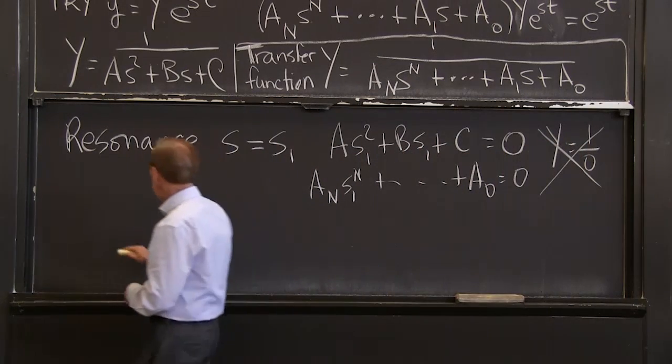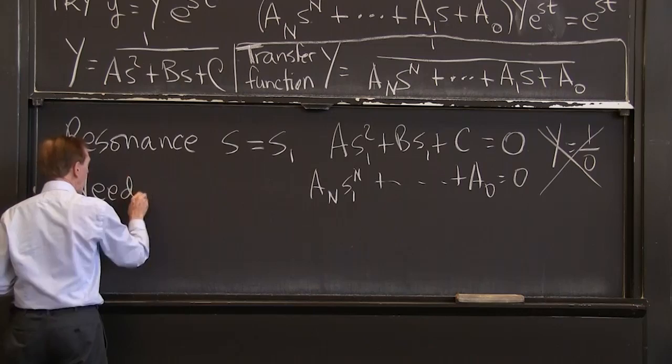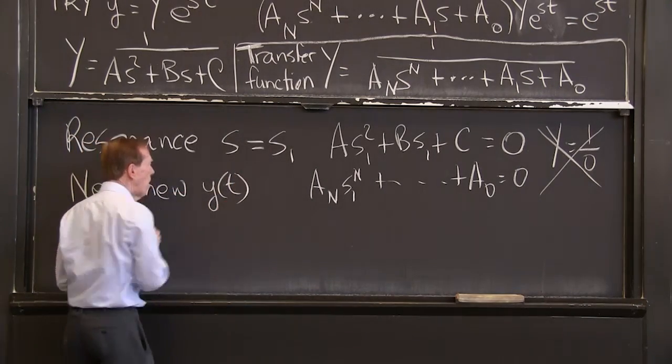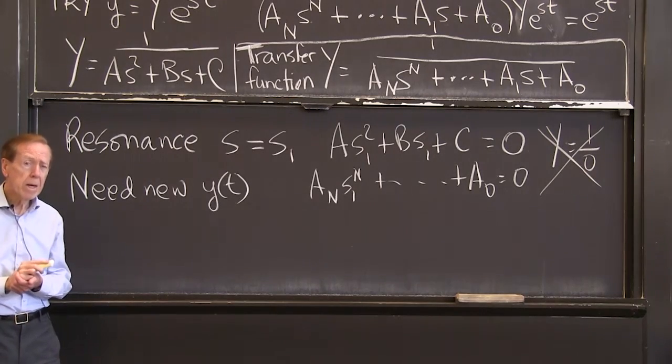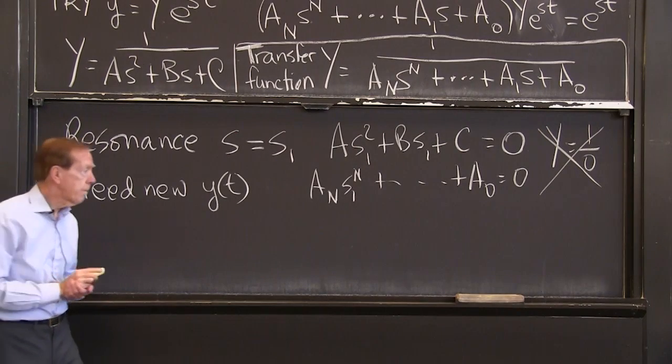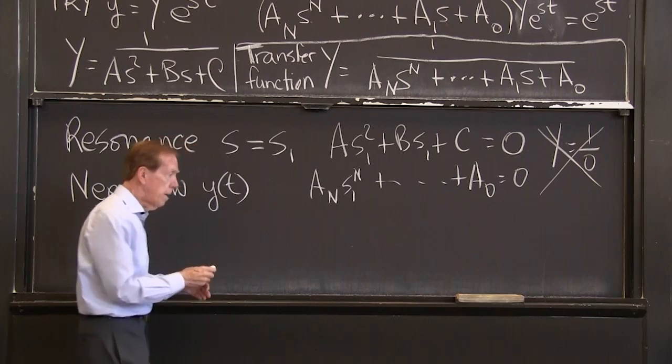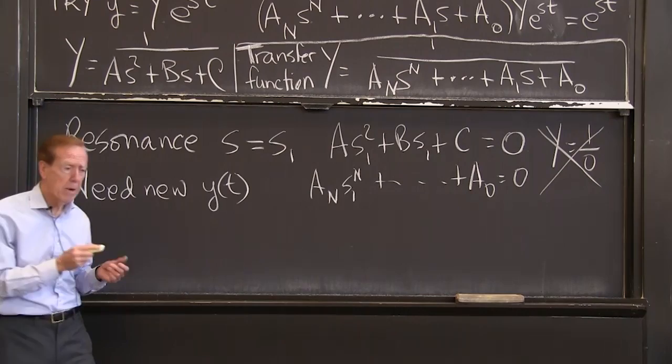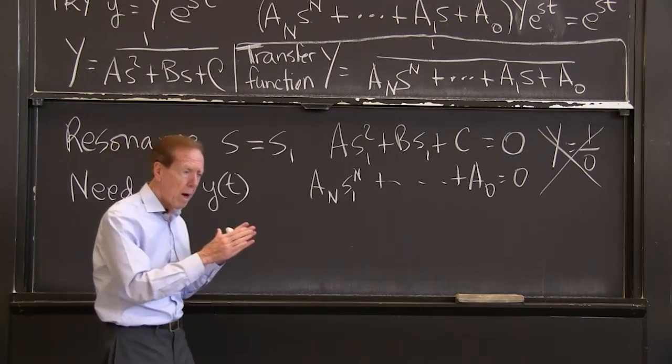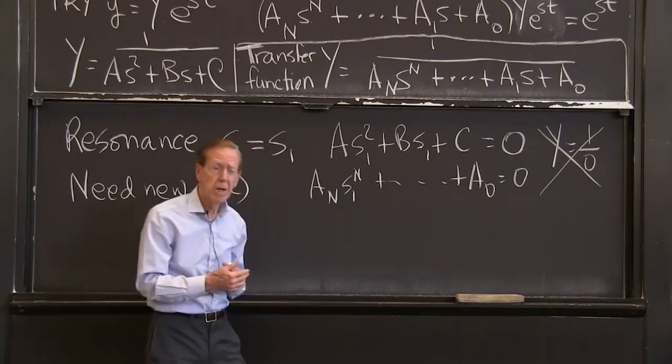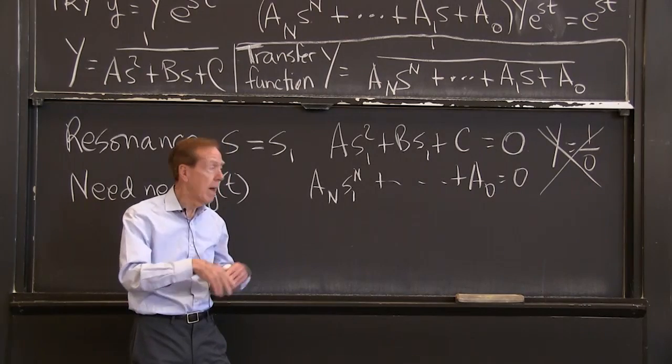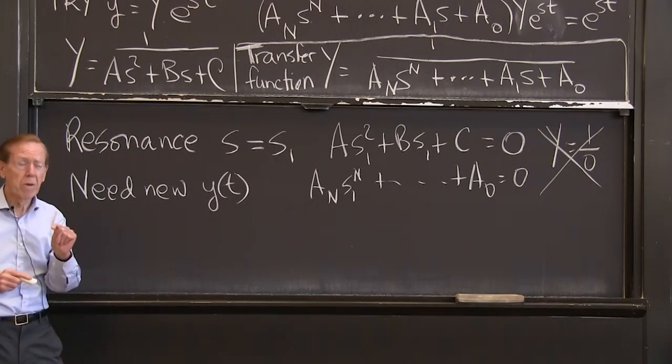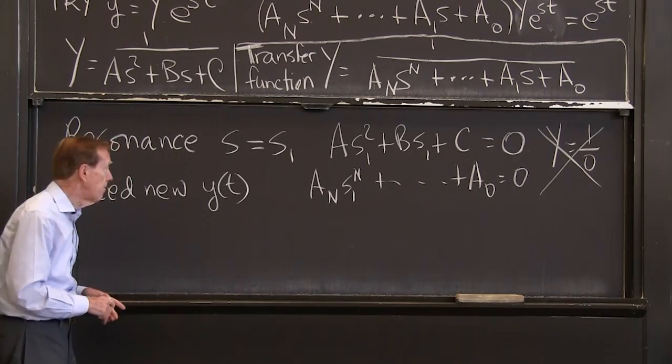In the nth degree equation, this gives us resonance. You see, because you remember, the null solutions were e to the s1t. If I plug in e to the s1t, the left side will give 0. So I can't get equal to a forcing term on the right side. I need a new solution. I need a new y of t.